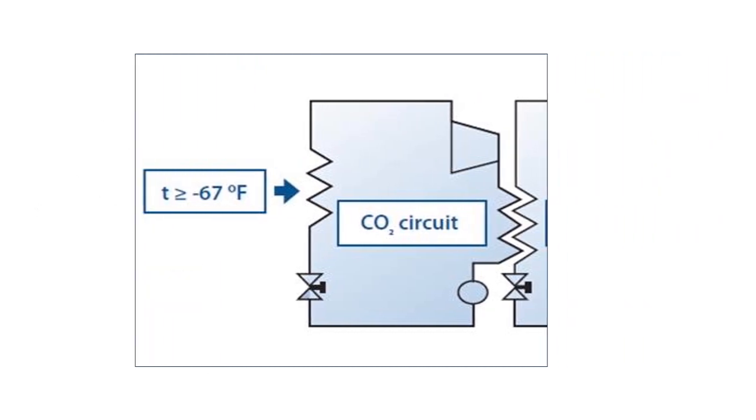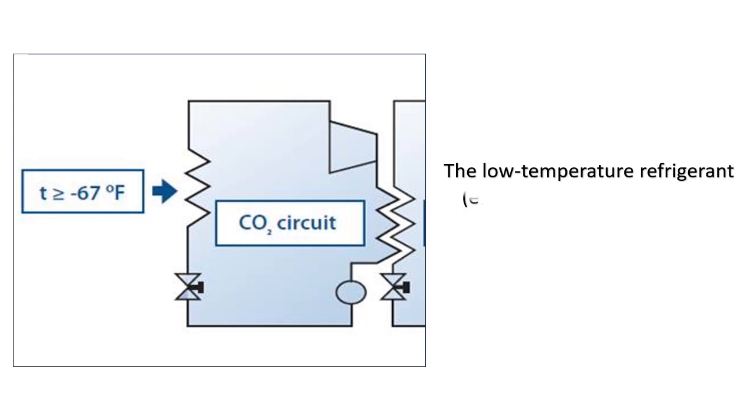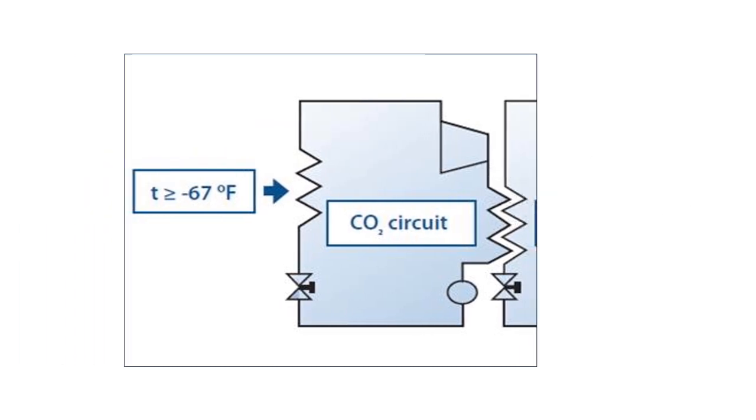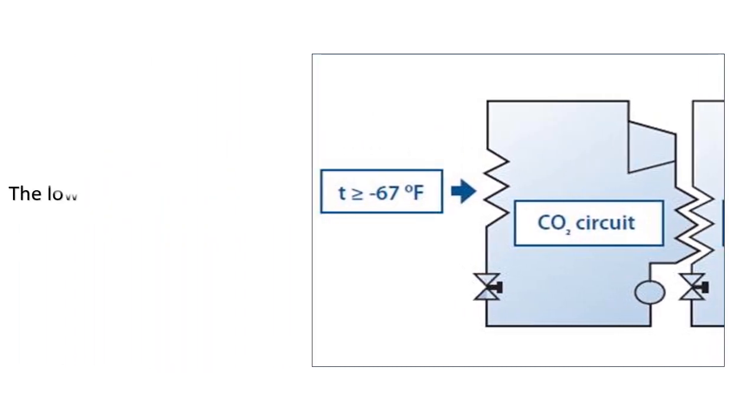The low-temperature refrigerant, e.g., R23, ethylene, absorbs heat from the heat exchanger in its evaporator. The low-temperature refrigerant vapor is then compressed in its own compressor.